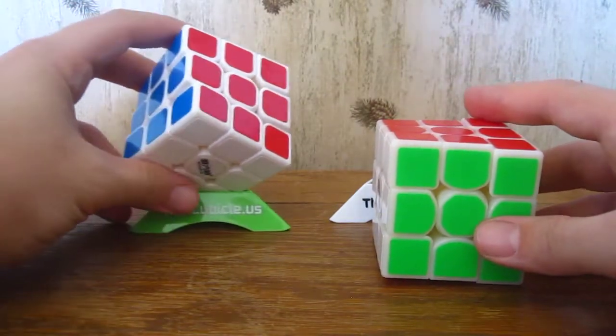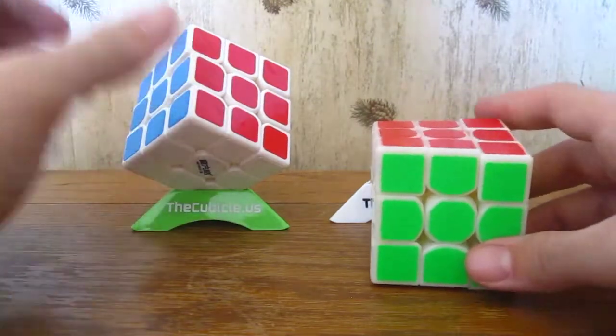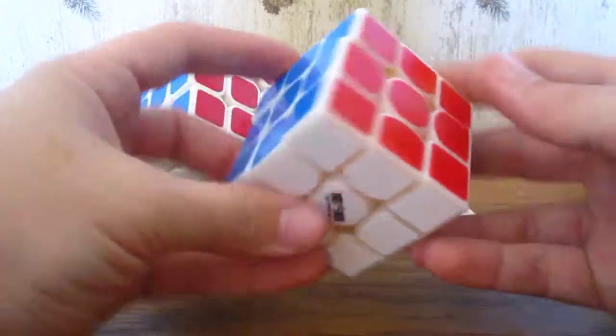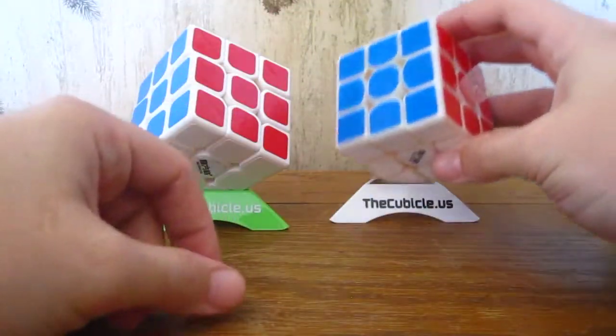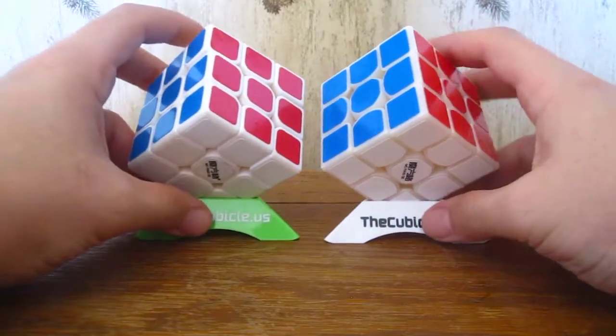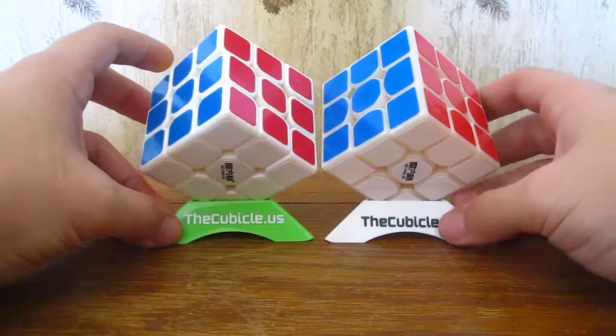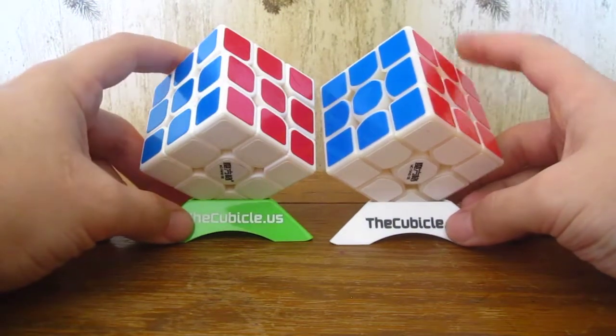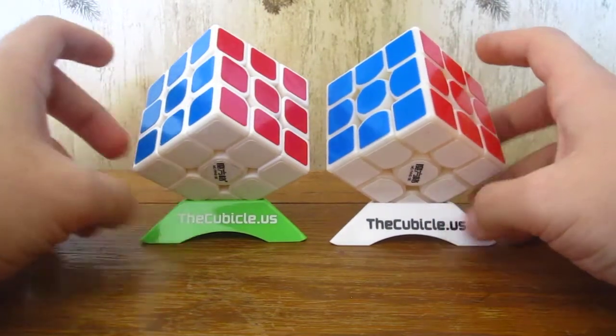Like, it's a great cube, but if you want an awesome cube, you're better off spending a little bit more money and getting something better like a Weilong GTS or Valk or GuoGuan Yuexiao. So, or if you have the money, a Gan.